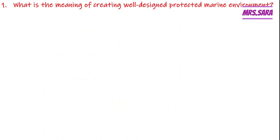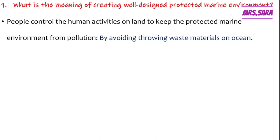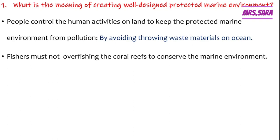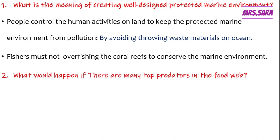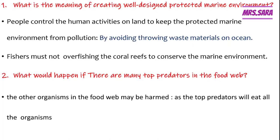What is the meaning of creating a well-designed protected marine environment, Primary 5? People control human activities on land to keep the protected marine environment from pollution by avoiding throwing waste material in the ocean. Also, fishers mustn't overfishing the coral reef to conserve the marine environment. Number 2: What would happen if there are many top predators in the food web? The other organisms in the food web may be harmed as the top predator will eat all the organisms.